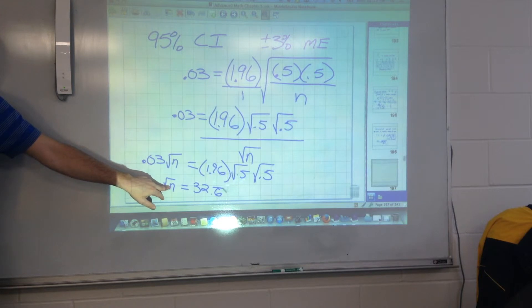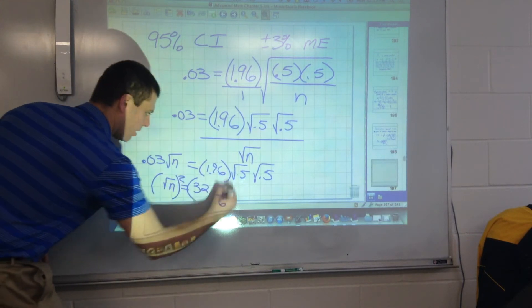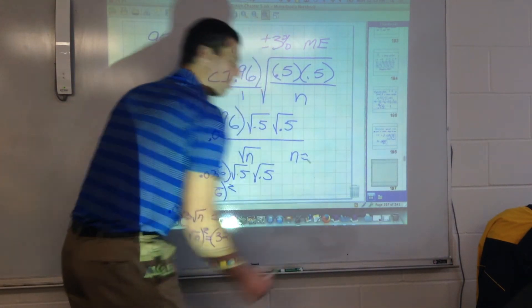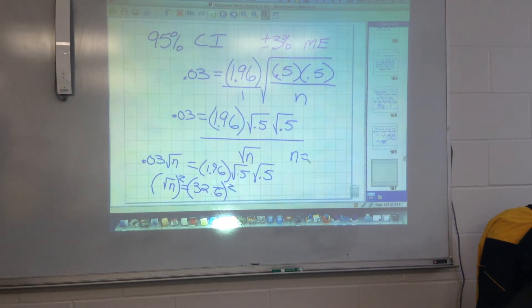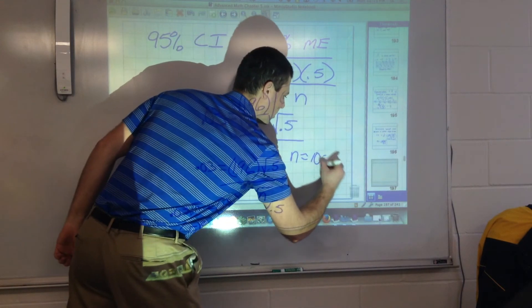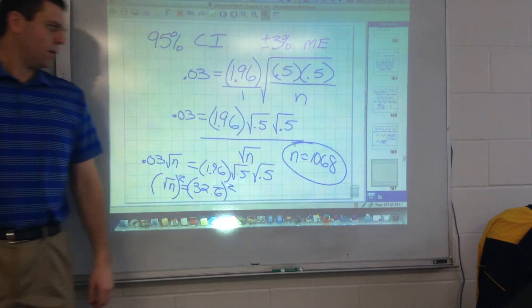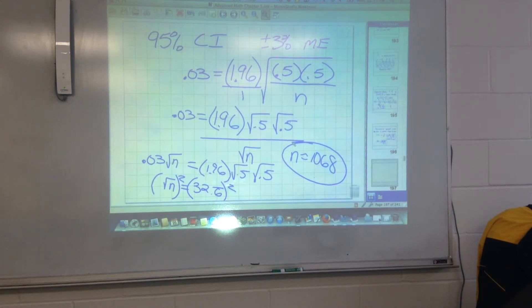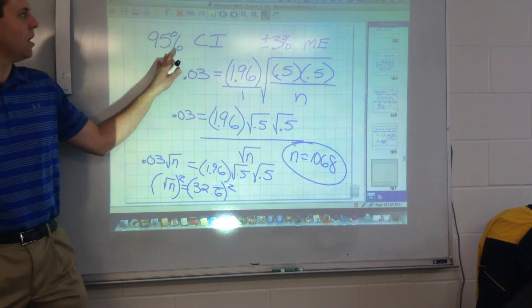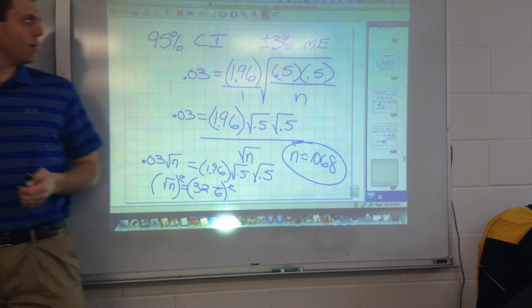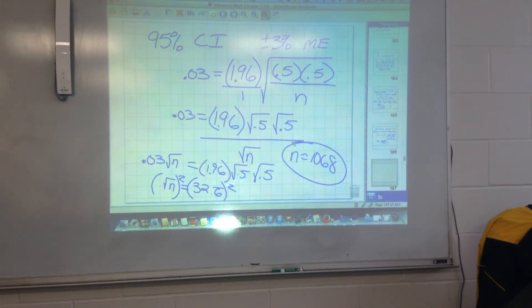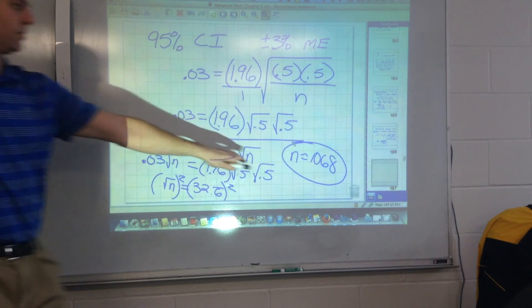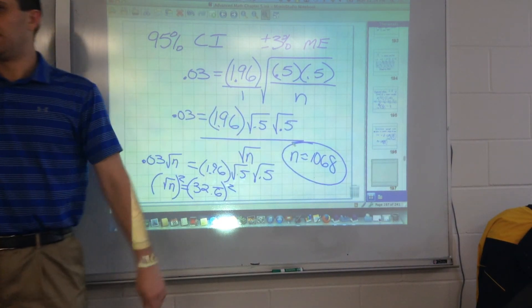Now we want to find n. So square both sides, right? Square undoes the square root. So squared, squared, n is... If there's a decimal, go up to the next person because you want to have a whole number of samples. 1,068. So if you want to meet those conditions, if you want to have a 95% confidence interval, and you want to be within plus or minus 3% for a margin of error, that's got to be your sample size.